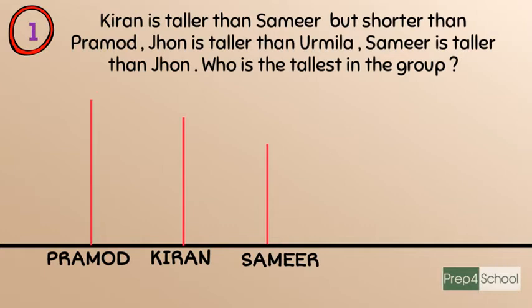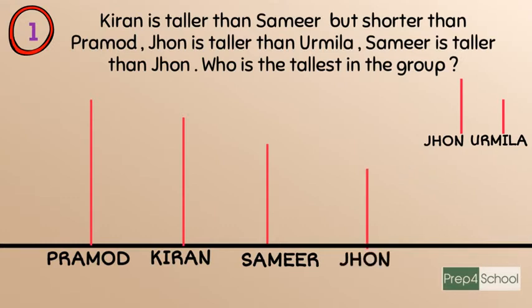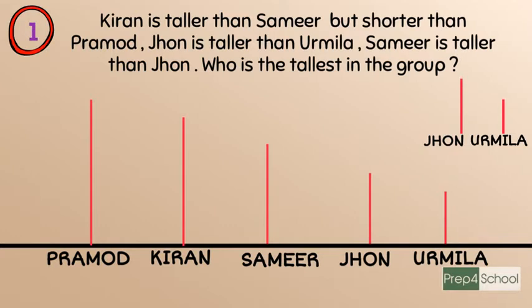John is taller than Urmila, but we first handle: Samir is taller than John, so John has less height compared to Samir. Then taking the sentence that John is taller than Urmila, Urmila has less height compared to John, and we draw accordingly.